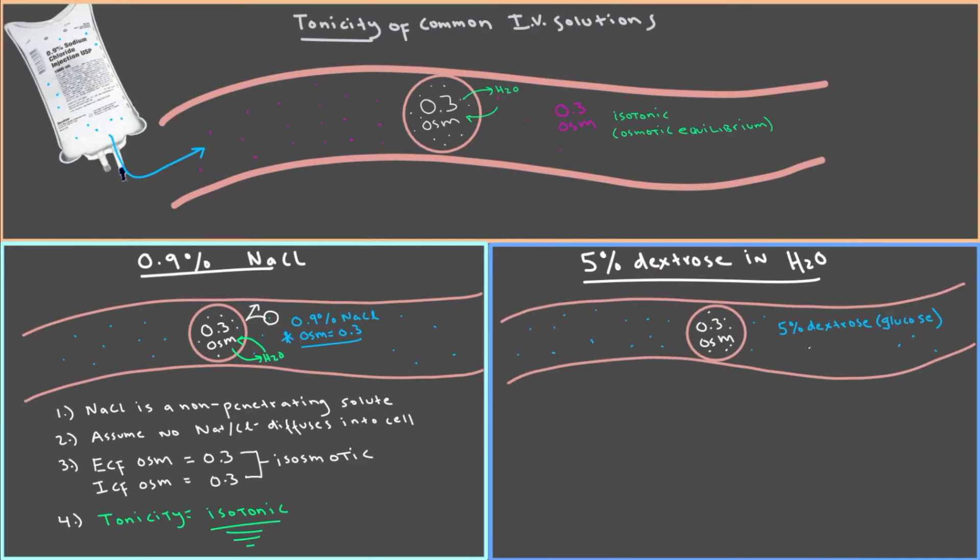So this is basically like giving somebody sugary water as an IV solution. That is literally what it is. But what's interesting about this solution too, 5% dextrose in water, is that it also has an osmolarity of 0.3. Just like the sodium chloride solution we saw a second ago, it is isoosmotic to your normal plasma to your normal cells.